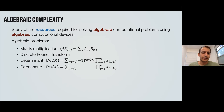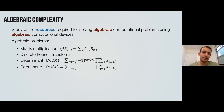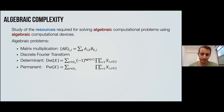The determinant has an evil cousin called the permanent. The permanent is very similar to the determinant except there are no signs — the sign is always plus one. The permanent comes up in combinatorics and even in quantum mechanics, where determinants and permanents describe the laws for some elementary particles. These are all examples of algebraic problems that we might want to compute.